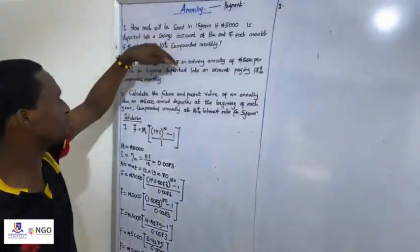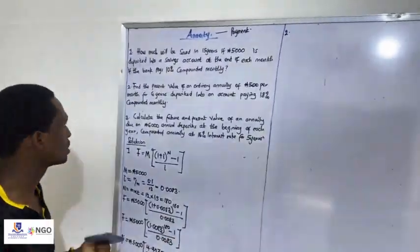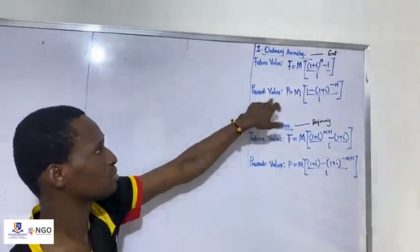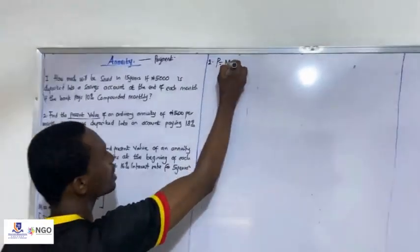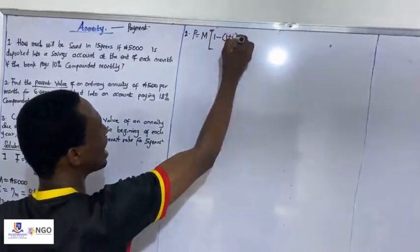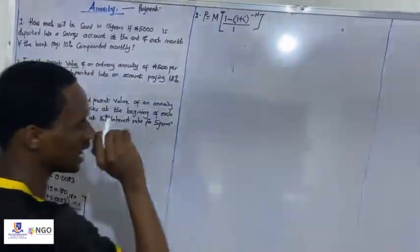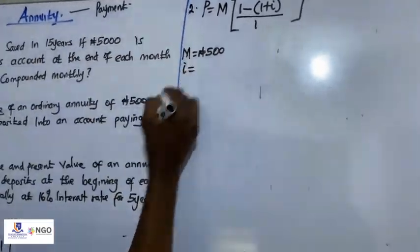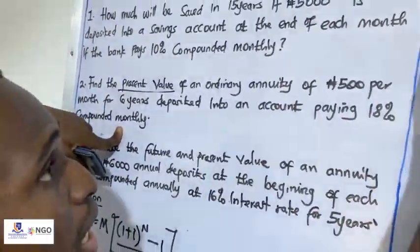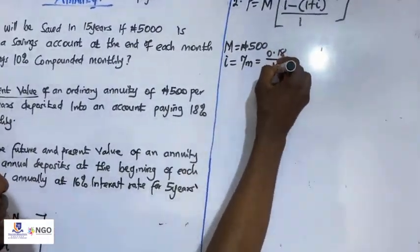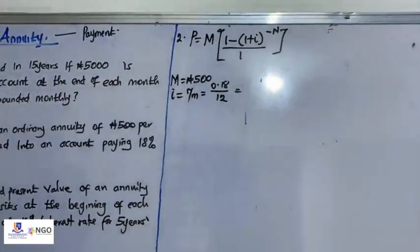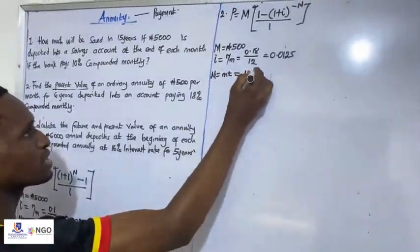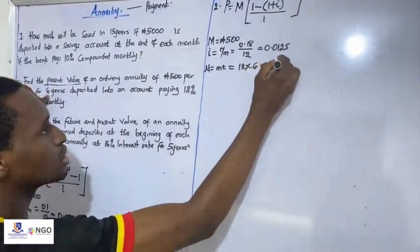Now the second question: find the present value of an ordinary annuity. We are looking for present value, so we use the present value formula: PV = M × [1 − (1 + i)^(−n)] / i. Let's bring out the parameters. M is 500.